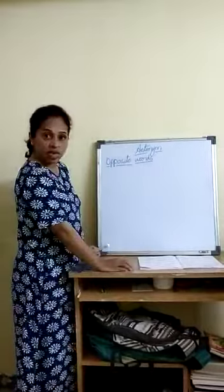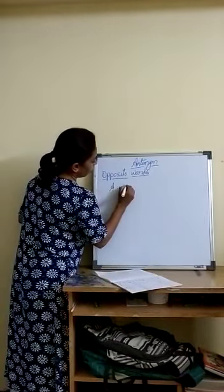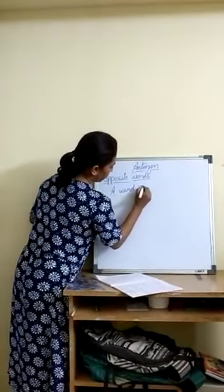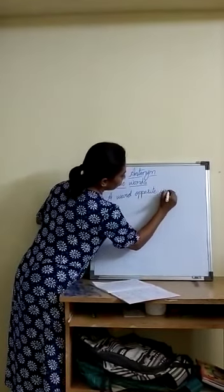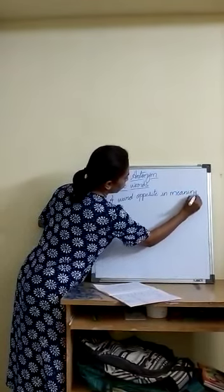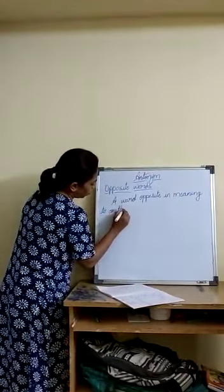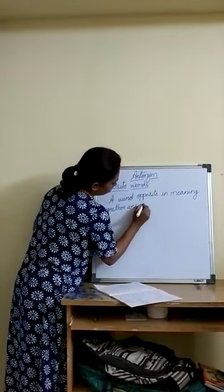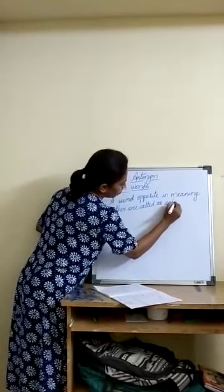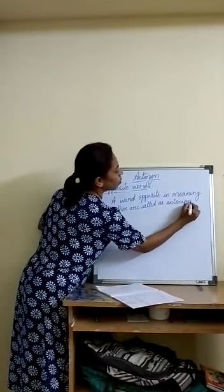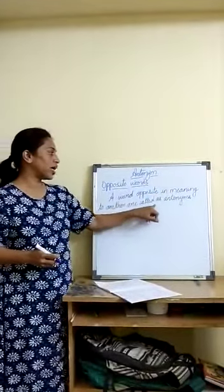So we will see the examples. First I will write the definition. A word opposite in meaning to another word is called an antonym.